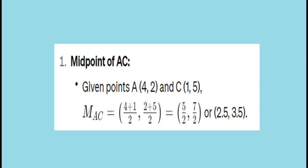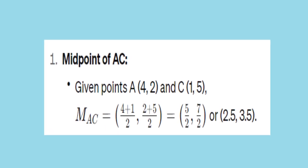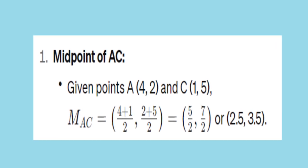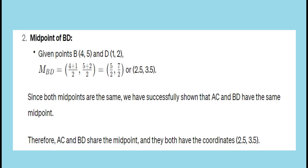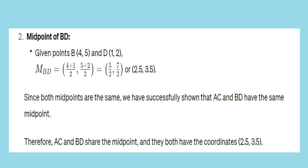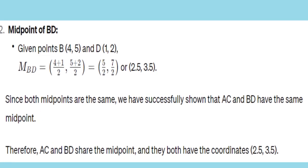Midpoint of AC: A(4,2), C(1,5). Midpoint AC = ((4+1)/2, (2+5)/2) = (5/2, 7/2) = (2.5, 3.5). Midpoint of BD: B(4,5), D(1,2). Midpoint BD = ((4+1)/2, (5+2)/2) = (5/2, 7/2) = (2.5, 3.5). As you can see, both midpoint AC and midpoint BD are equal — they are both (2.5, 3.5). Therefore, we have shown that the midpoints of AC and BD are the same.